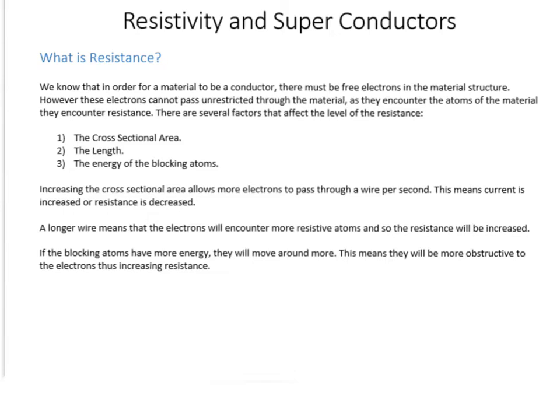We'll have a look at the equation in a second which governs all of this. The last one is a bit more complicated. So if the blocking atoms have energy, the free electrons have come from atoms, so the atoms are still there, and they can move around and they can get in the way of the charge trying to flow through. And the more energy they have, the more obstructive they are to the electrons, and so the resistance will increase with that.